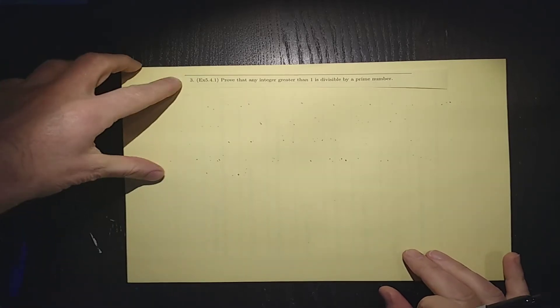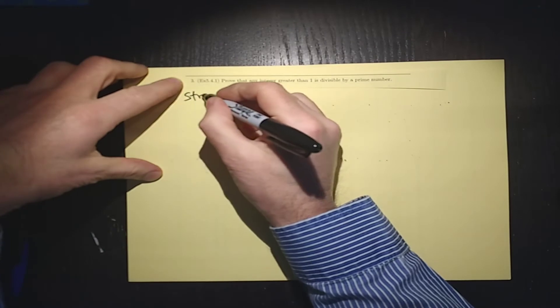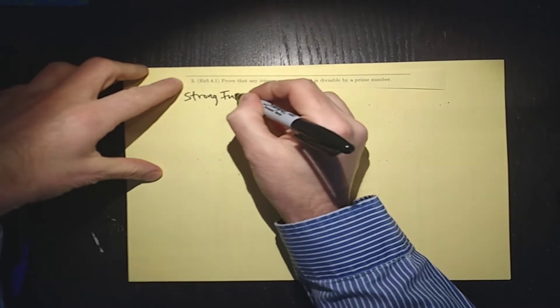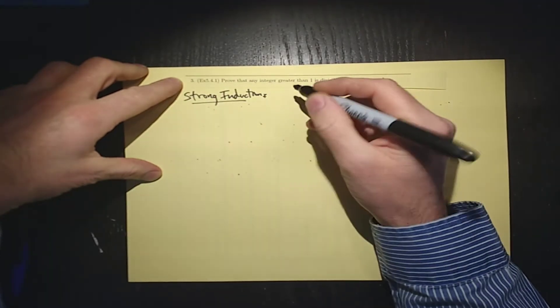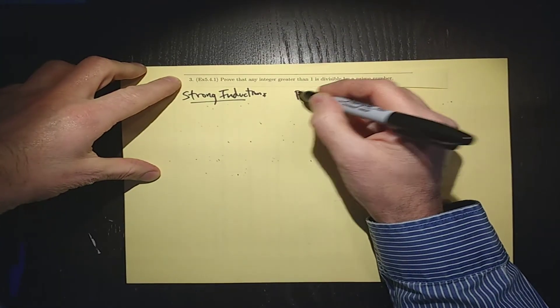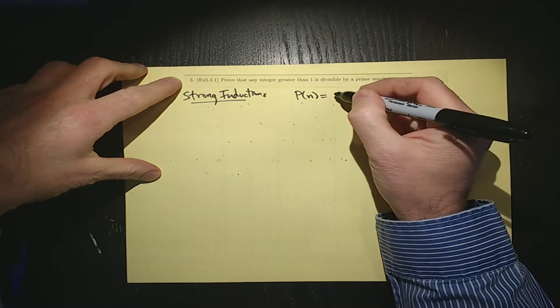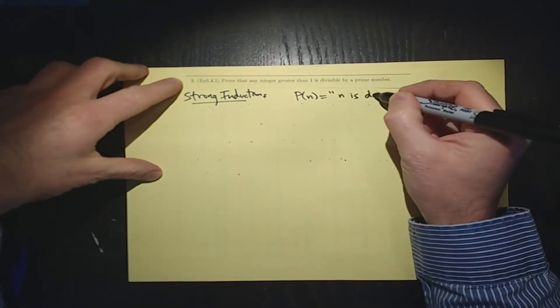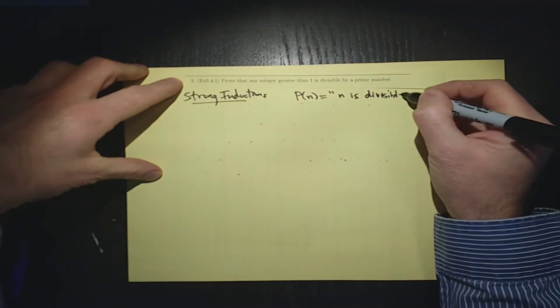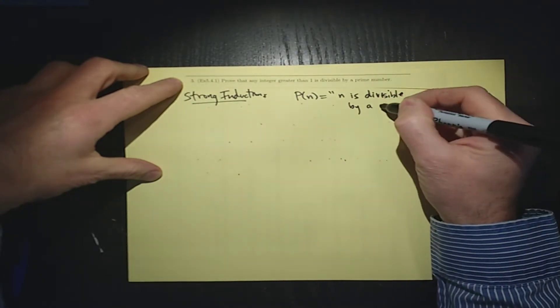And we need to show that every integer greater than 1 is divisible by a prime number. So what we can do is this. We can do a proof by strong induction. And of course we need a statement. We need our P(n). P(n) is the statement that n is divisible by a prime.